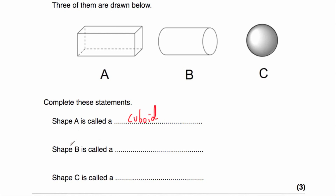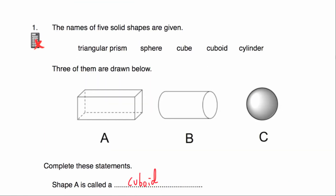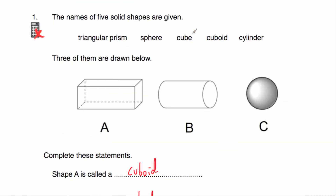Shape B is called a cylinder, so we'll write cylinder in. And finally, shape C is called a sphere, so we'll write that in. If we just double check our list, we had cuboid, cylinder and sphere. Fantastic.